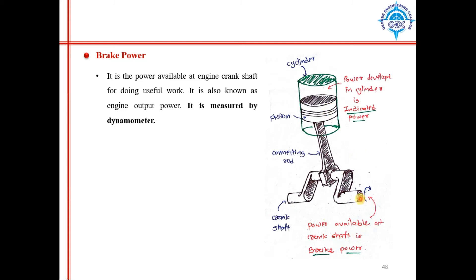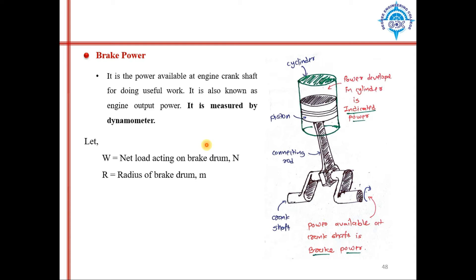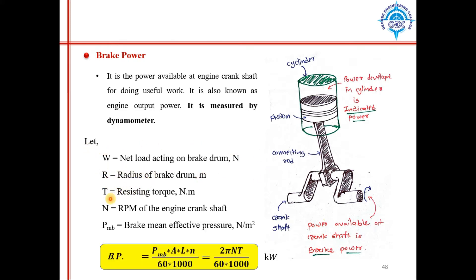Brake power is the power available at the crankshaft, and it is measured by a dynamometer. If the brake mean effective pressure PMB is given, you can directly find brake power from the same formula as indicated power but replacing indicated mean effective pressure with brake mean effective pressure.